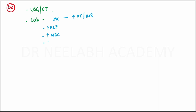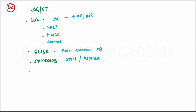Other findings include increased ALP (alkaline phosphatase), increased WBC, and anemia. It can also be diagnosed by ELISA by detecting anti-amoebic antibodies. On microscopy it can be demonstrated by stool or aspirate. Culture is usually sterile. The resolution of abscess on radiological investigation generally takes about 3 to 9 months.